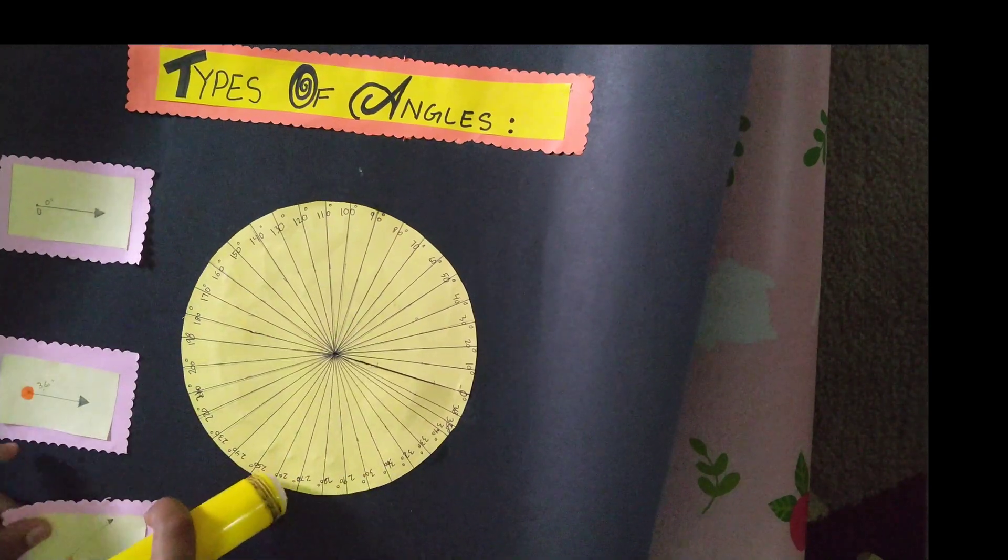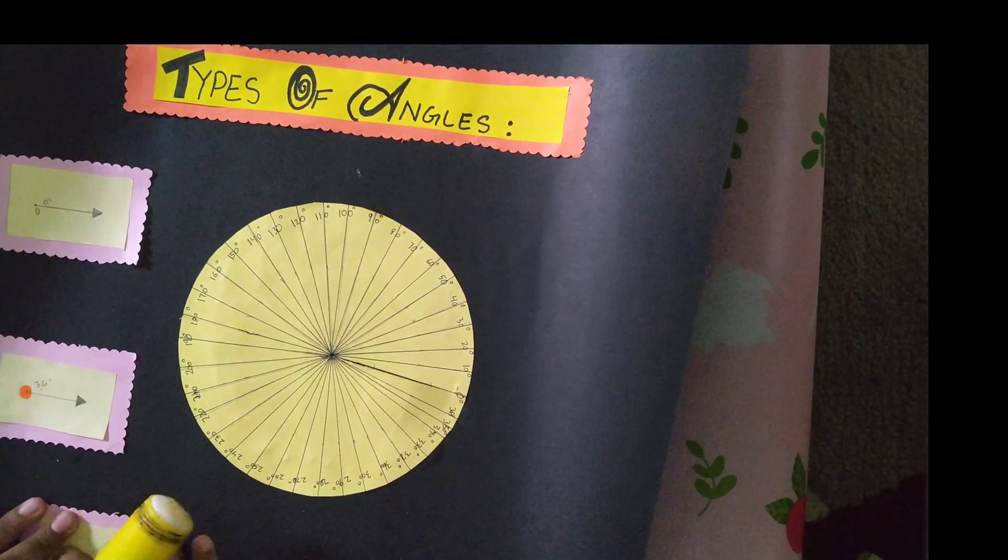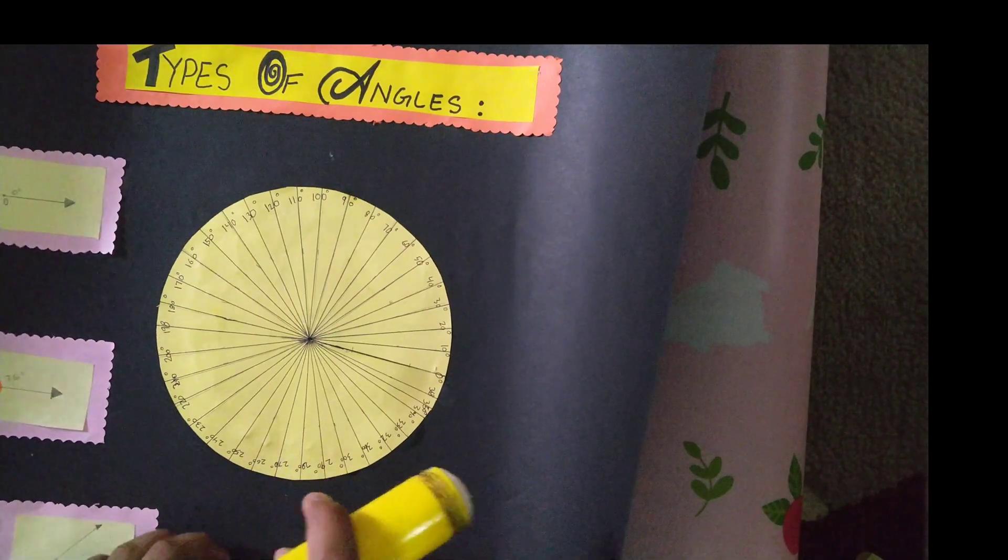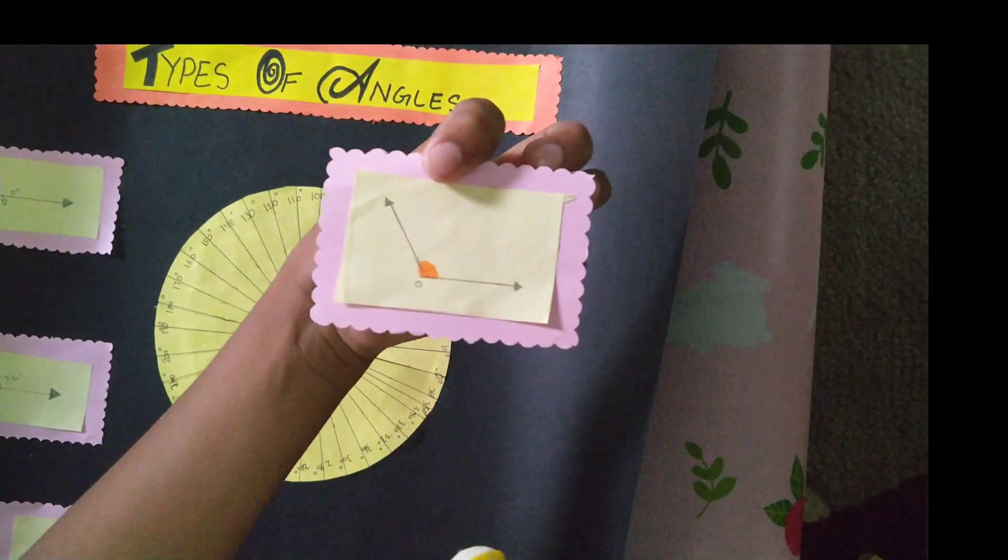So now you can see all the angles: the zero angle, the 360 angle, and many more angles.